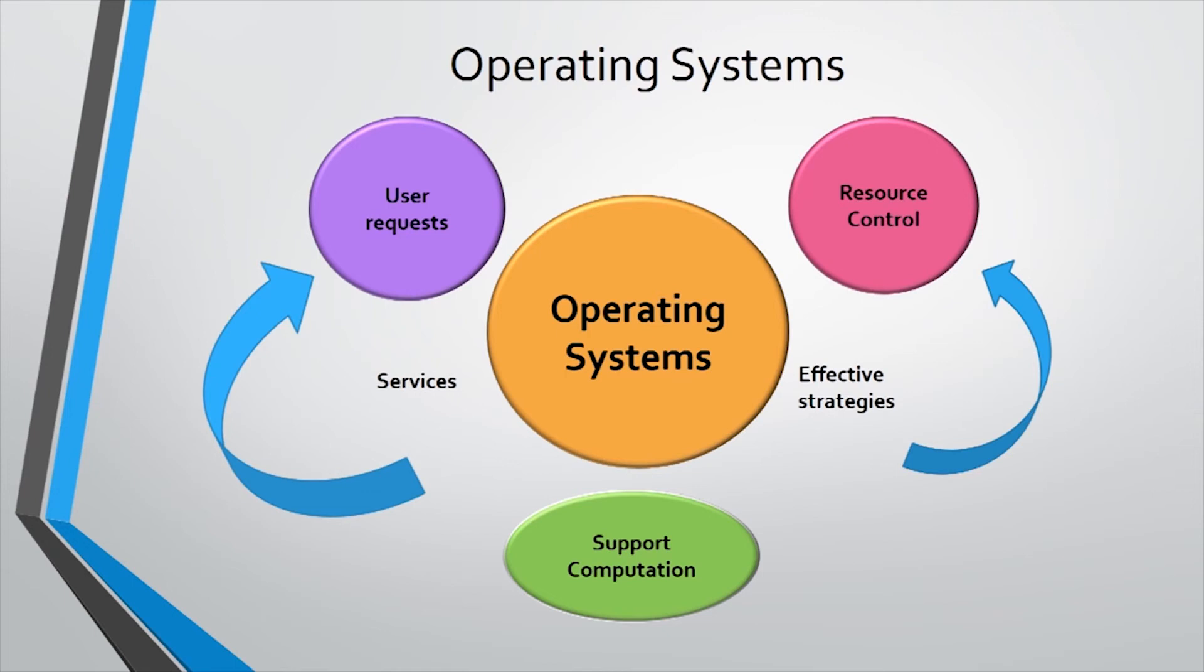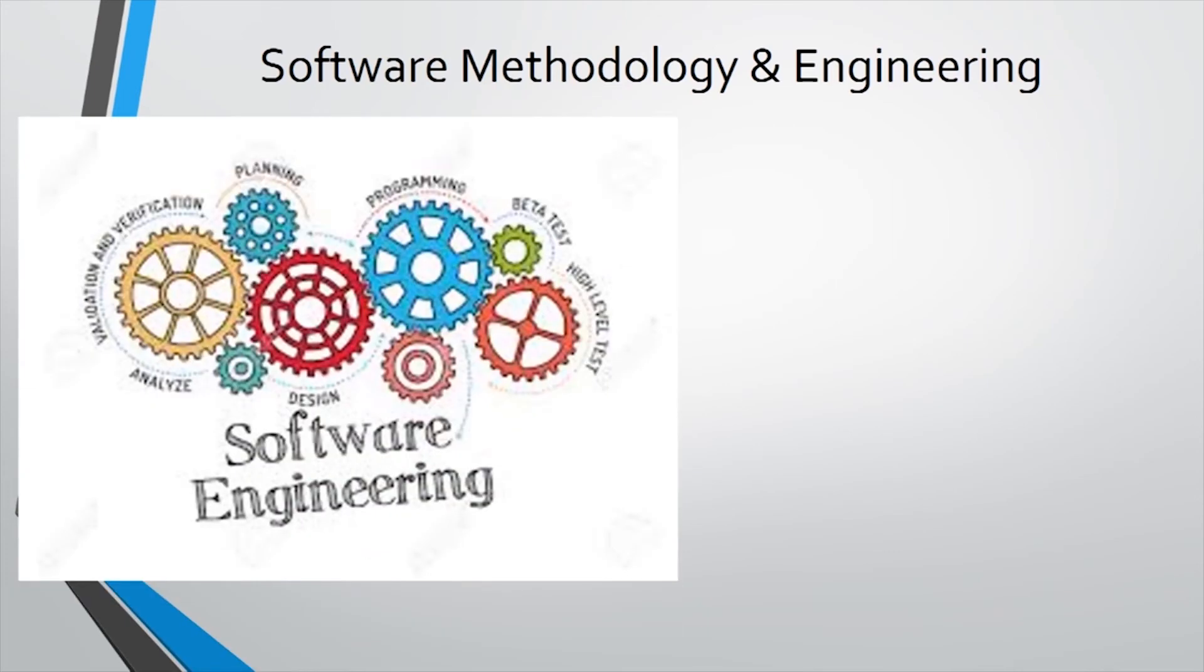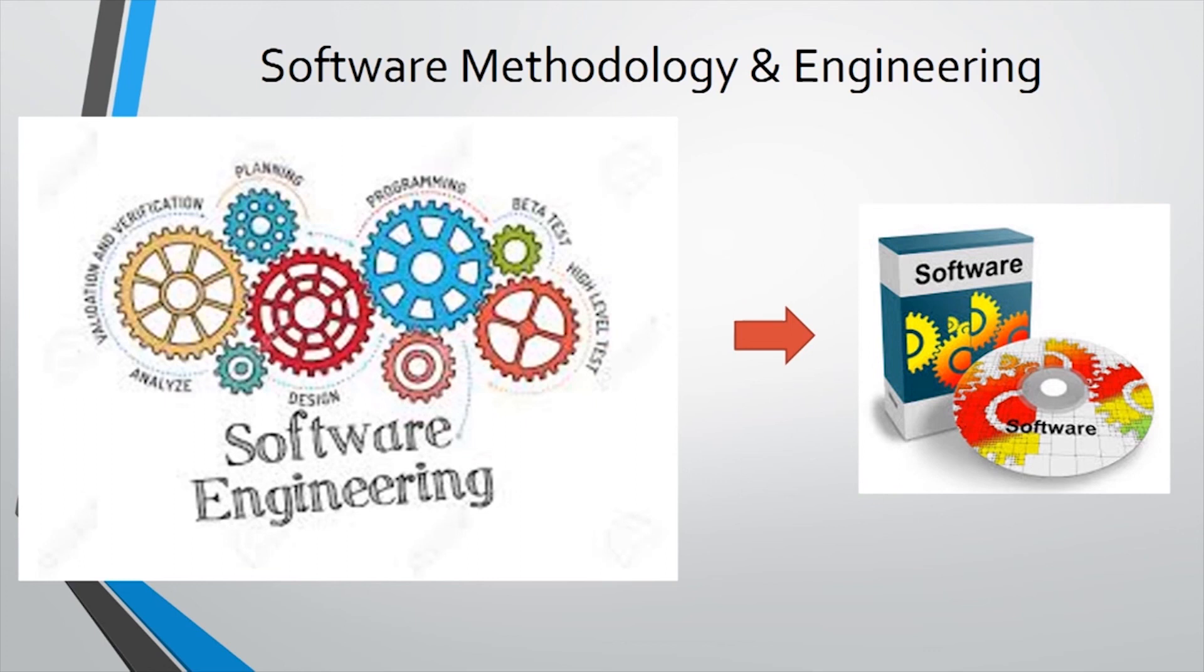Number 7. Software methodology and engineering. The major focus of this area is the specification, design, and production of large software systems. Principles of programming and software development, verification and validation of software, and the specification and production of software systems that are safe, secure, reliable, and dependable are of special interest.